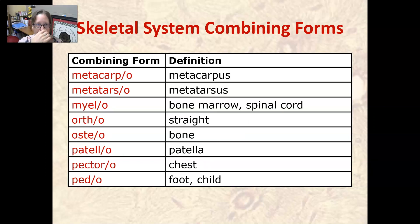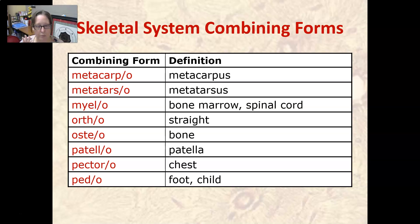Metacarpo means metacarpus, which are your hand bones. Metatarso means metatarsus, which are your foot bones. Myelo means bone marrow or spinal cord. Ortho means straight — that's where you get the specialty of orthopedics, which deals with broken bones and making them straight again.